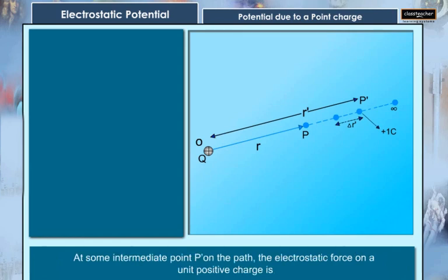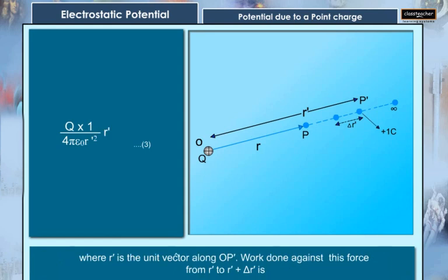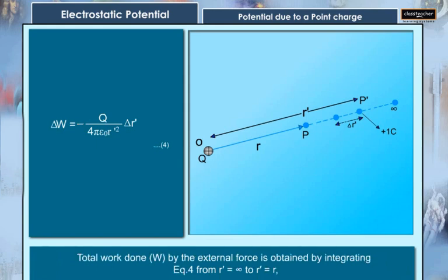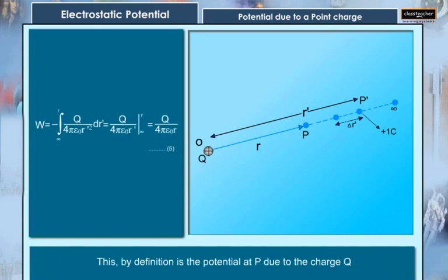At some intermediate point P' on the path, the electrostatic force on a unit positive charge is calculated. Work done against this force from R to R plus dR is computed. The negative sign appears because the force opposes motion. Total work done W by the external force is obtained by integrating from R equals infinity to R. This by definition is the potential at P due to the charge Q.